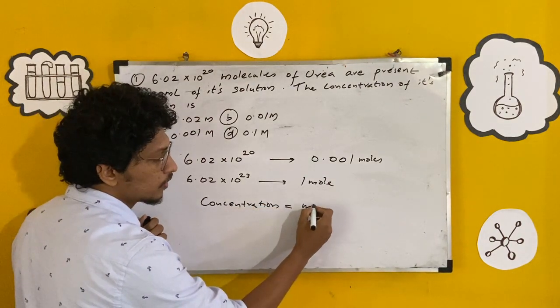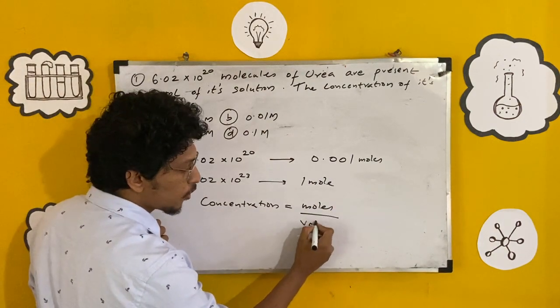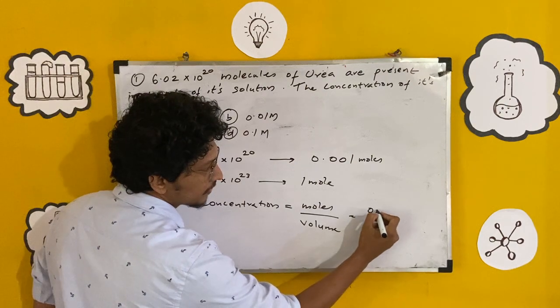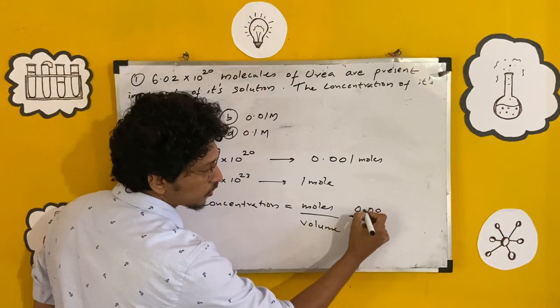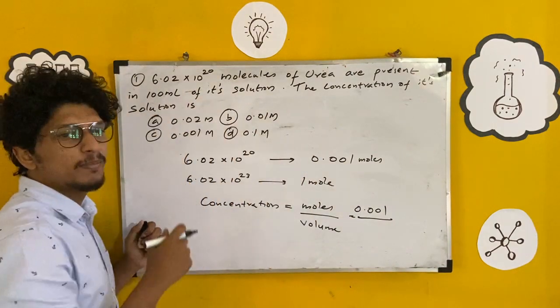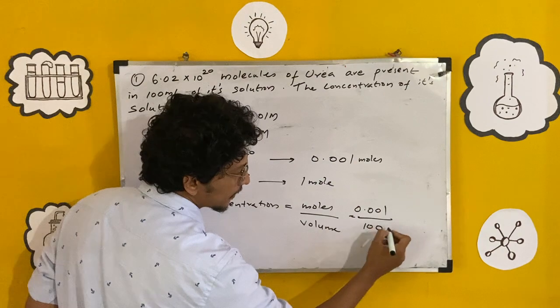Concentration is equal to moles per liter, or moles per volume. So here we have 0.001 divided by – it is given in milliliters, so we have to calculate in liters – we will write 100 and it will multiply with 1000.